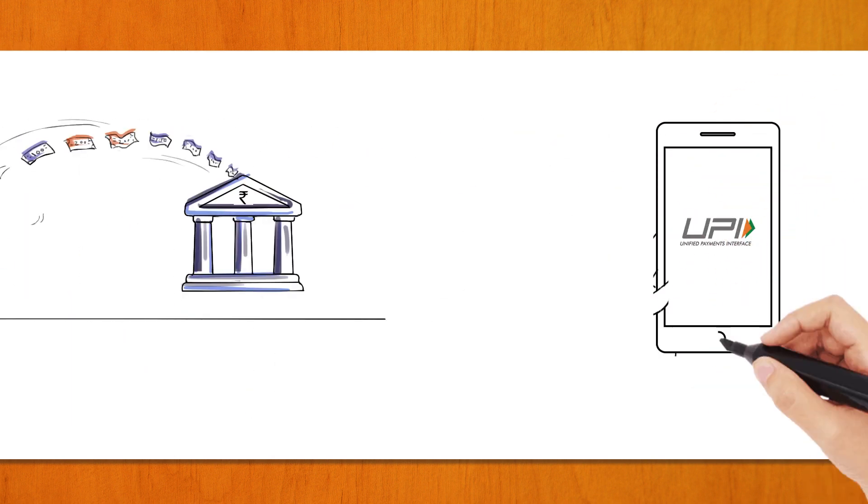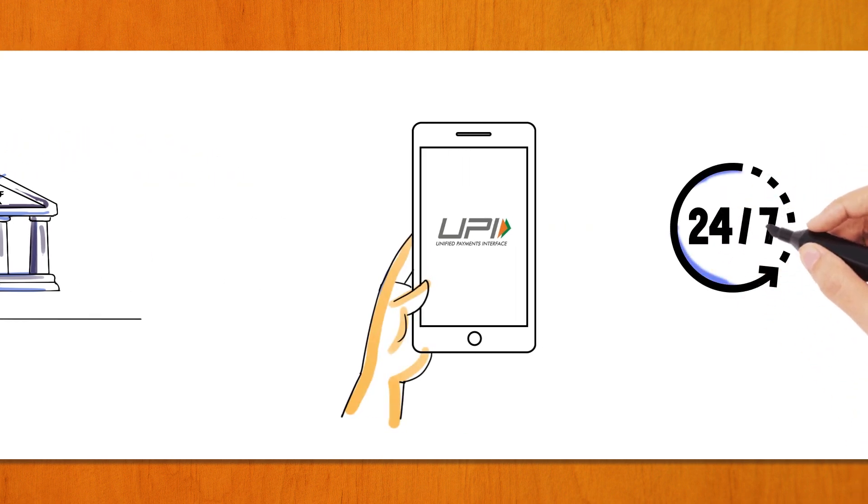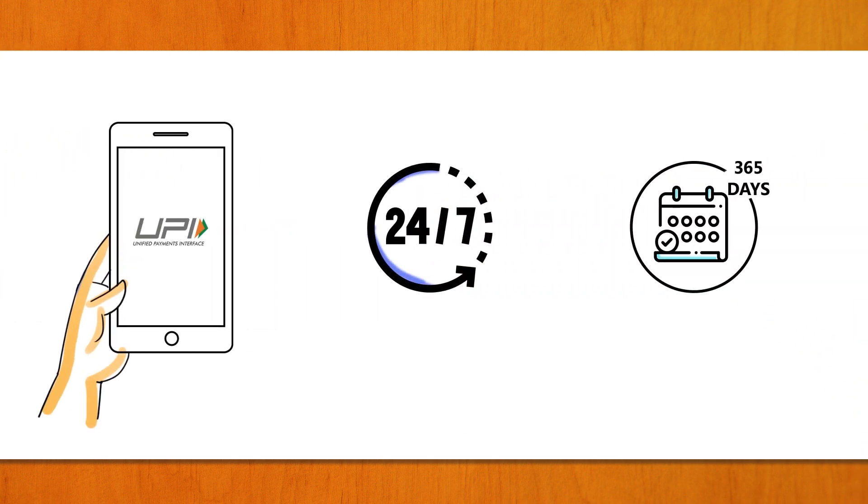Using UPI can help. Distributor can make payment 24 by 7 and 365 days from anywhere with no pressure of weekend or month-end billing.